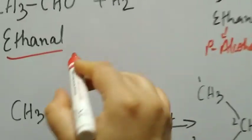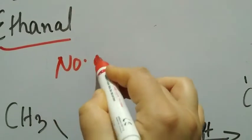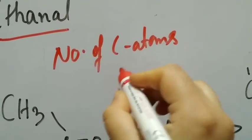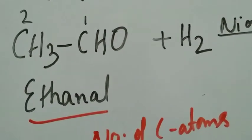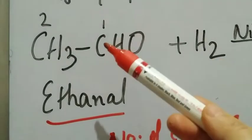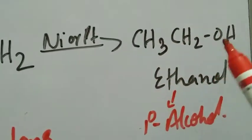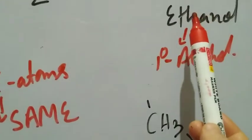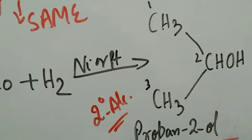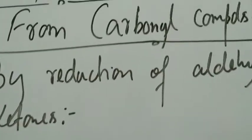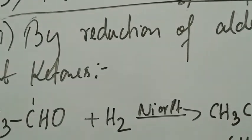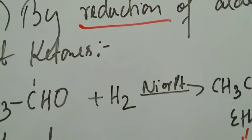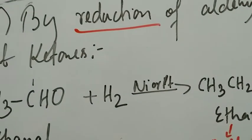The number of carbon atoms remains the same throughout the reaction. Starting with three carbon atoms in acetone, you have three carbon atoms in propan-2-ol. This is the preparation of alcohols from aldehydes and ketones by reduction. We will continue in the next video.